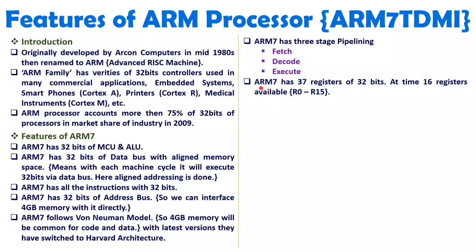ARM7 has 37 registers of 32 bits each. But at a time, only 16 registers are available to the programmer. There are R0 to R15 — 16 registers available for user mode. With respect to the operating mode, different registers become available, giving 37 total registers. All register sizes are 32 bits. I will explain how those 37 registers are organized when I make the programming model video.